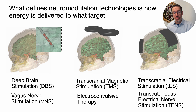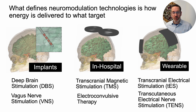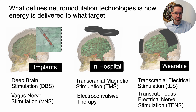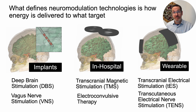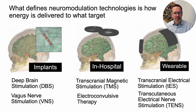That's an example of a non-invasive wearable device. There are many other kinds of technologies. Some fall into the implant category — things that need to be inserted inside your body — like deep brain stimulation, spinal cord stimulation, and vagus nerve stimulation. There are other treatments that are not implanted but are still only available in a hospital or medical center, such as transcranial magnetic stimulation or ECT. Finally, you have the wearable category, which includes TENS but also transcranial direct current stimulation.